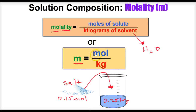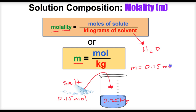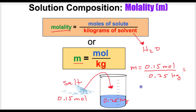To get the molality, take the moles of solute — which in this case is 0.15 — divided by the kilograms of solvent, which is 0.25, and we should get our answer. So to calculate: take the moles of solute, 0.15, divide that by the kilograms of solvent, 0.25 kilograms. If we put this in our calculator, we should end up with 0.60 moles per kilogram.